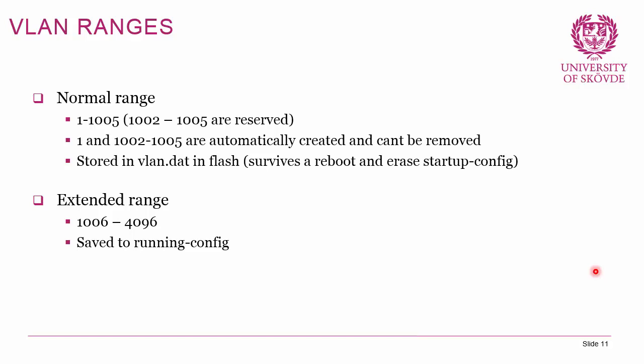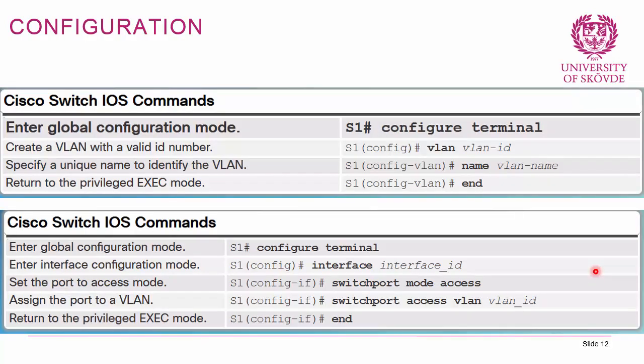Extended range VLANs are 1006 to 4096 and are saved to running config and thus to startup config if you save the running config. Configuring VLANs is extremely simple. You go to configuration terminal, then type 'vlan' followed by the VLAN number you want. You can also assign a name using the 'name' command. If you want the switch accessible for remote configuration or for inter-VLAN routing using Layer 3 switching, you need to create switch virtual interfaces using 'interface vlan' and the VLAN number.